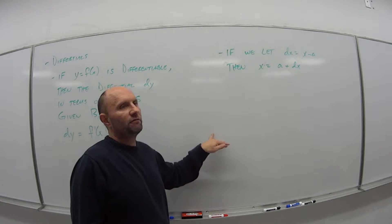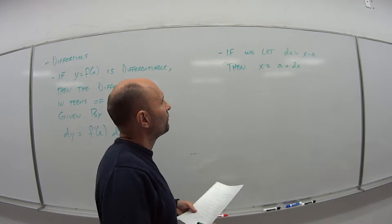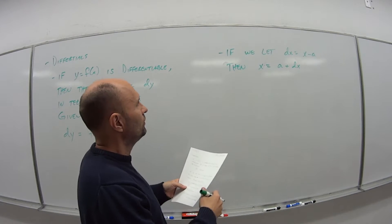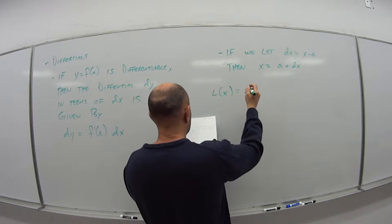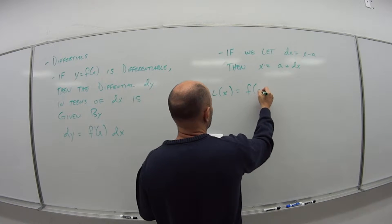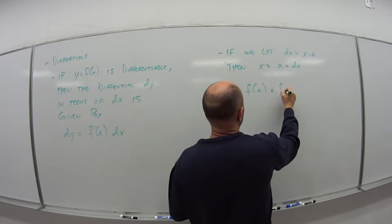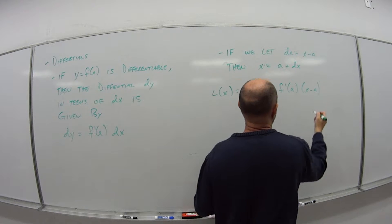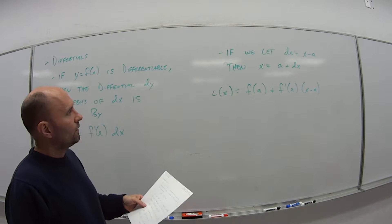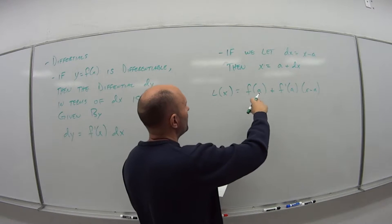So now if we go back to video one, our linear approximation, and substituting what we have, we have L of x is equal to f of a plus f prime of a times x minus a.